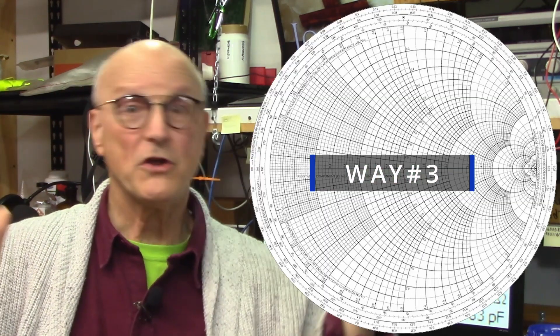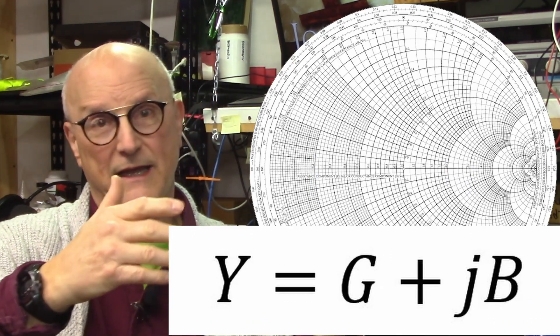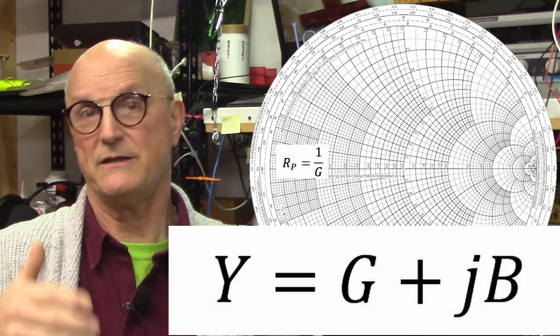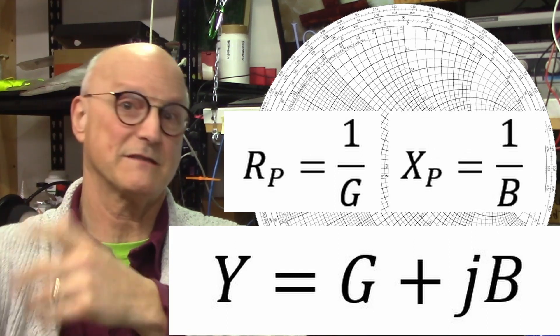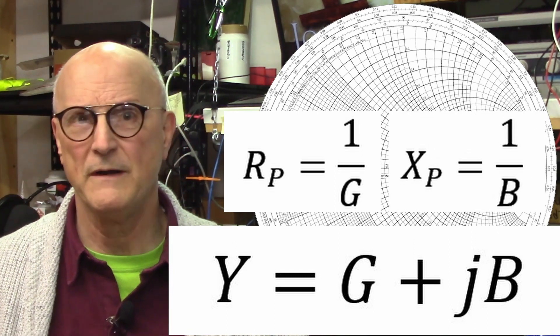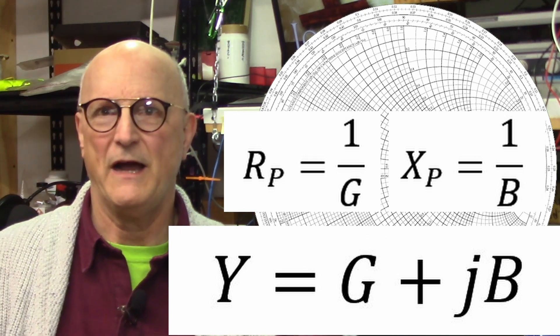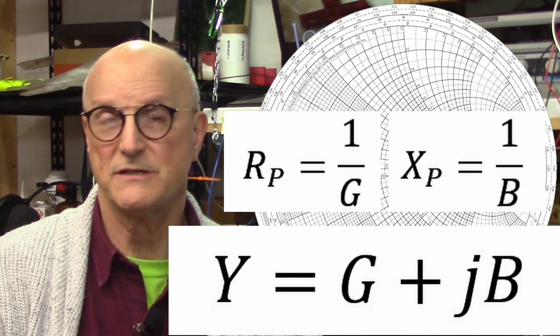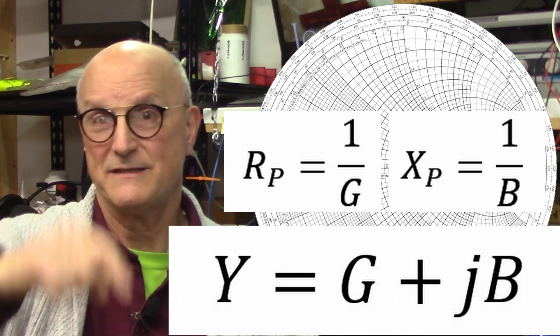Or you could use a Smith chart to translate the impedance to admittance, and then again, individually translate the conductance and susceptance to resistance and reactance, just like I talked about before. But as before, I'm not going to do this here. I've provided detailed instructions on how to do this in the math document. The link, like I said, is down in the description for you.